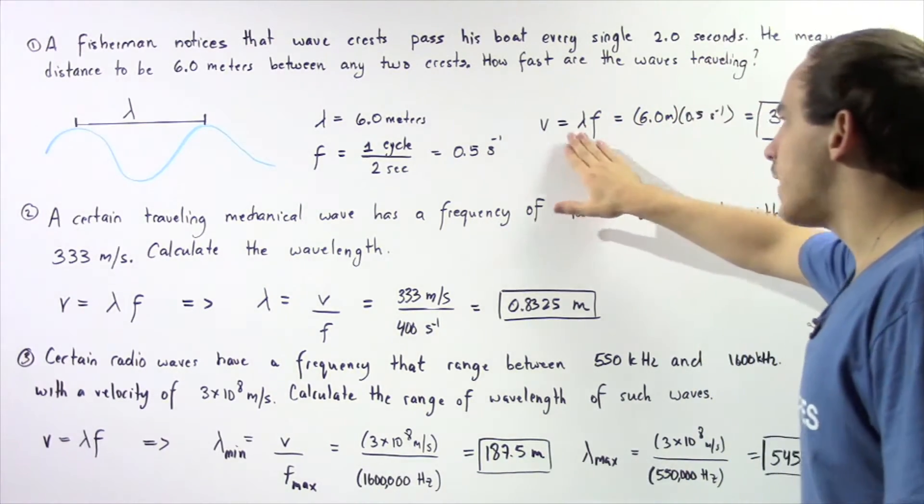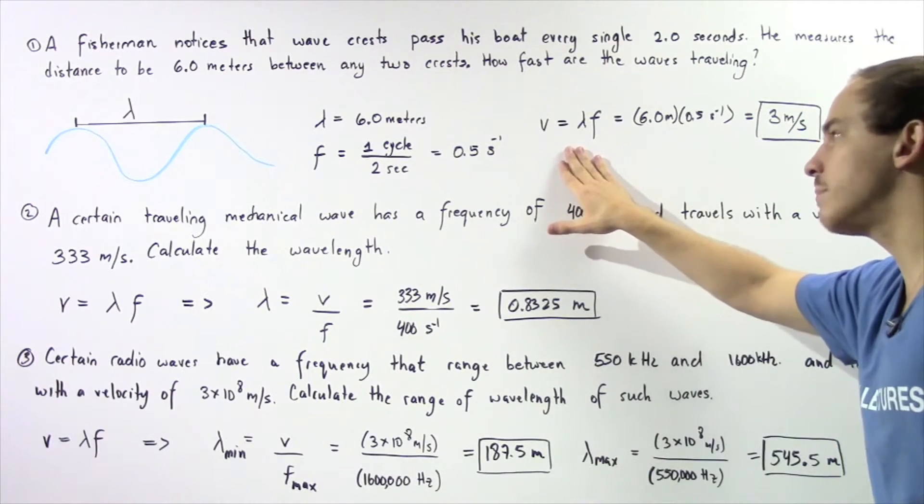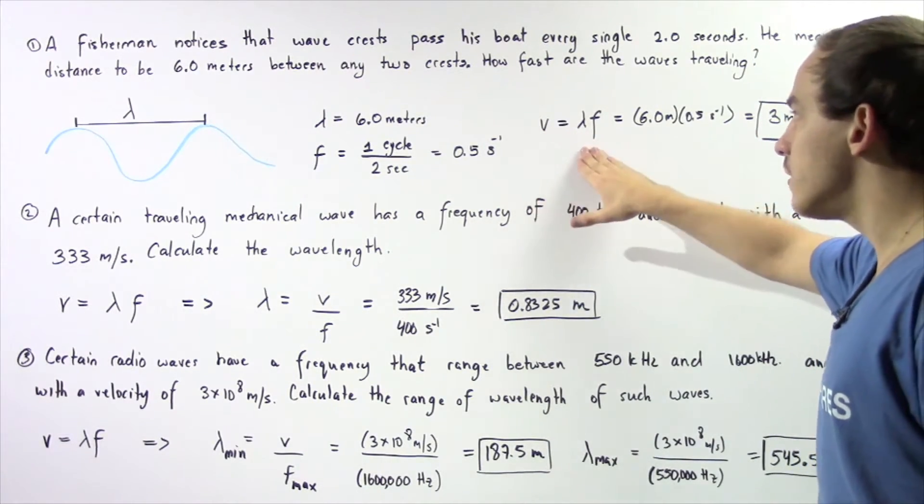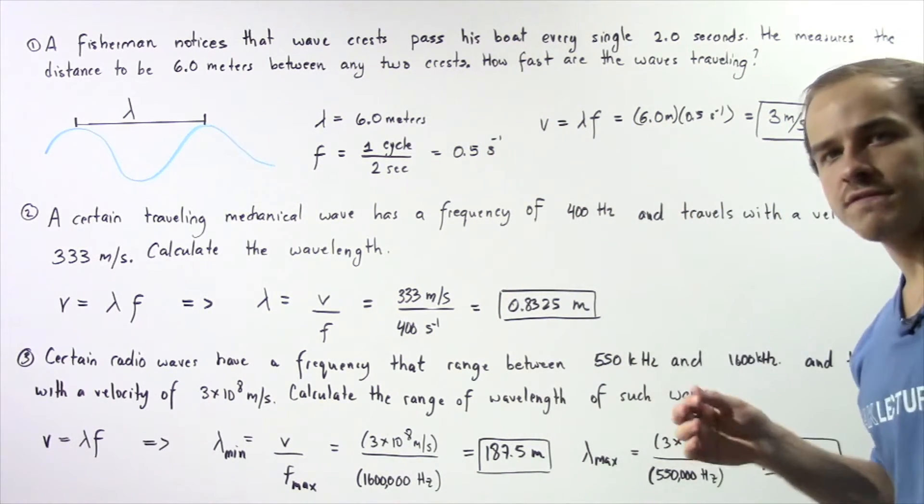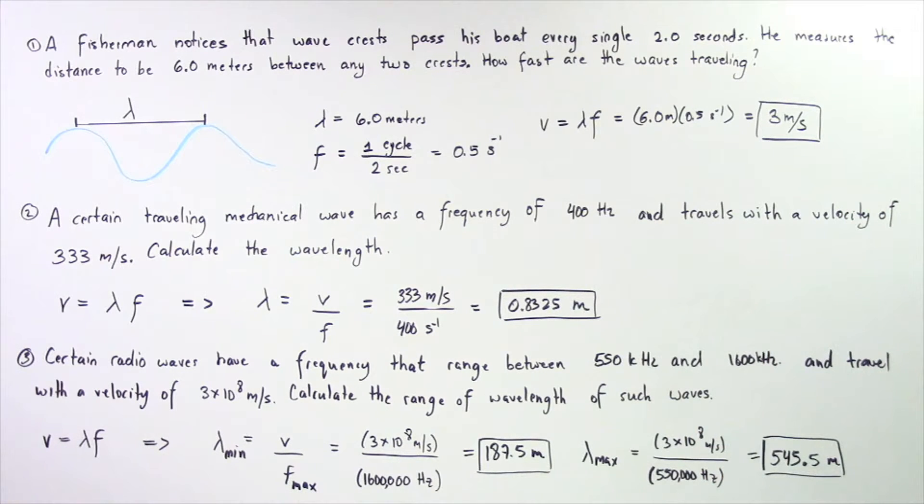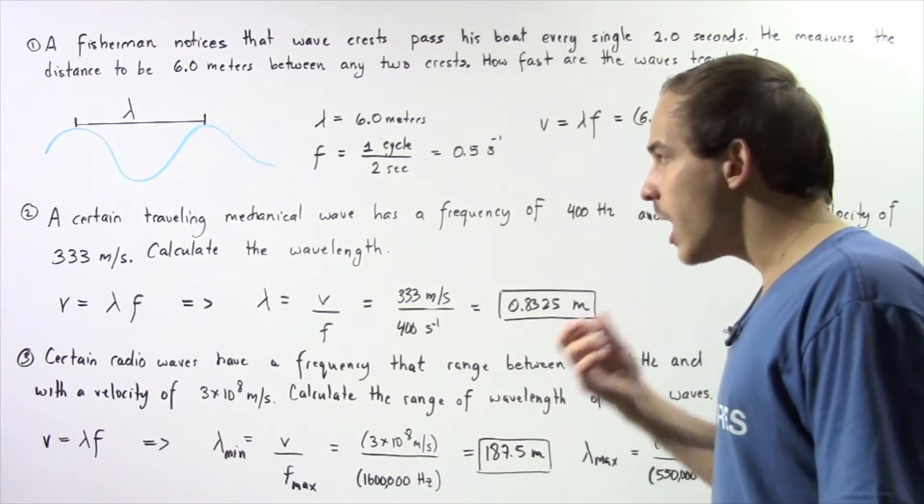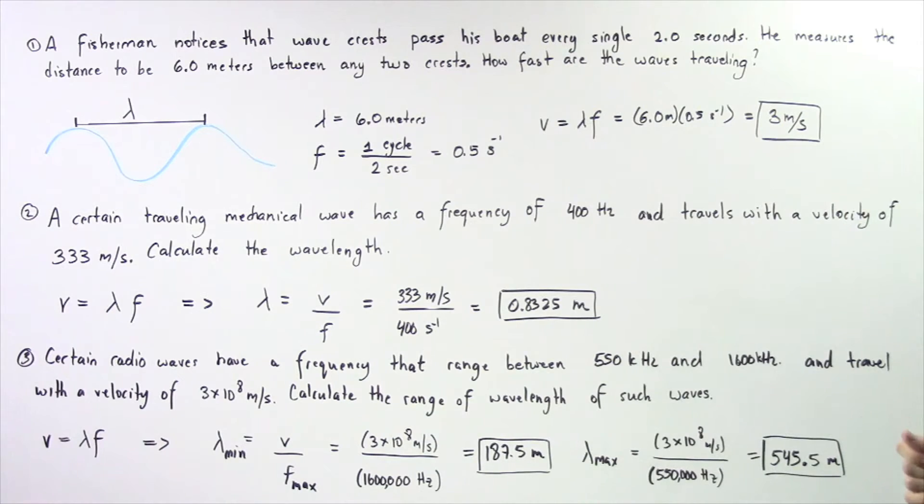Now if we use the following equation, we can calculate the velocity of our propagating wave. Velocity is equal to the product of our wavelength and the frequency. So six meters multiplied by 0.5 hertz gives us a velocity of three meters per second. So that means every single second, our wave travels a distance of three meters.